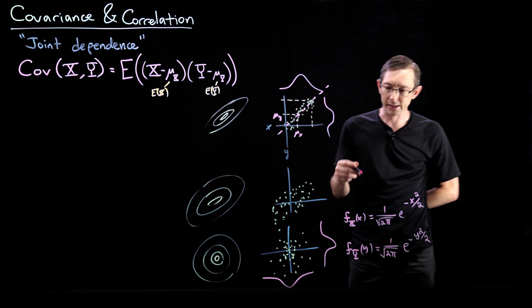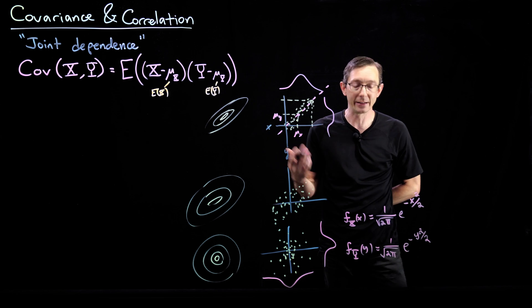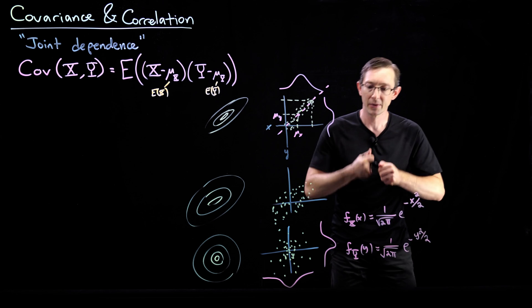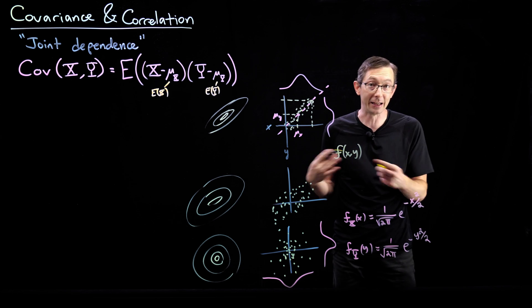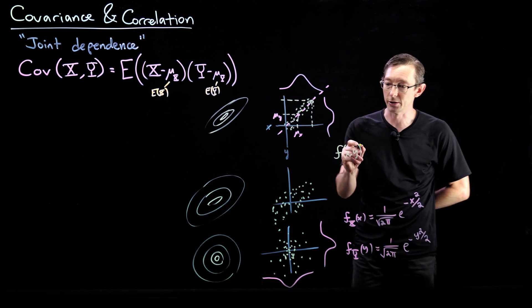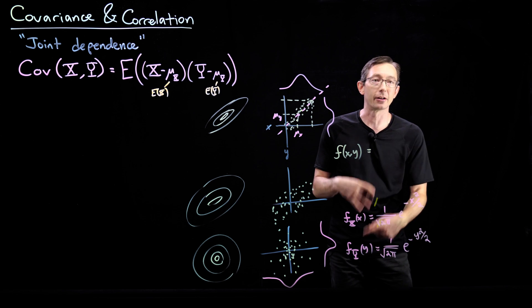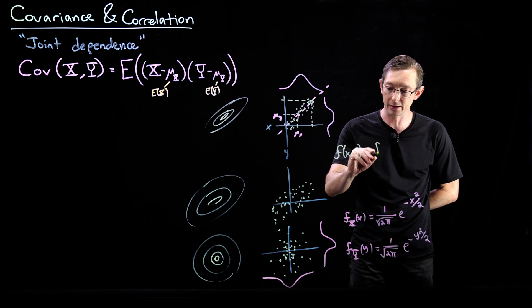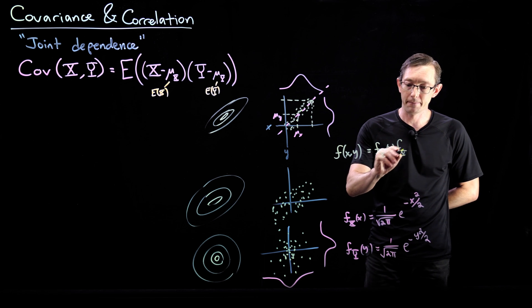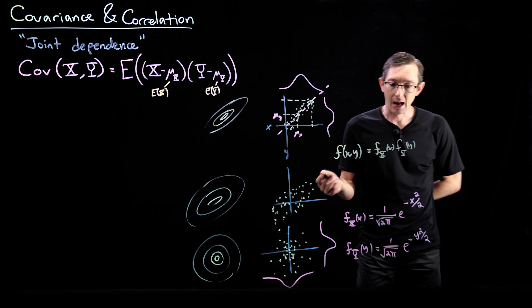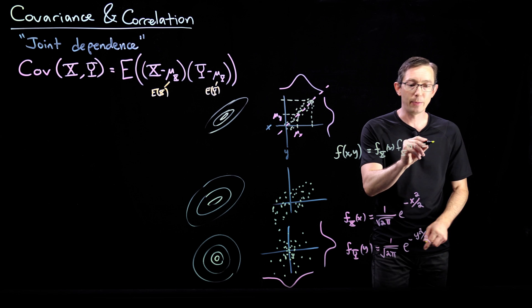Then if I multiply these two, and this is where the independence comes in, the joint distribution f of x comma y, I claim, is just the product of these two. So let's multiply these two together and see what happens. I'm claiming that this is fx times fy of y, and that's going to equal 1 over 2 pi times e to the minus...